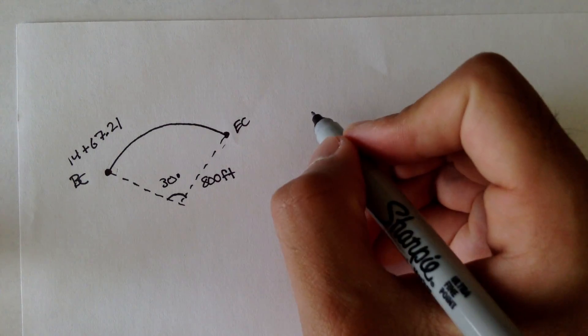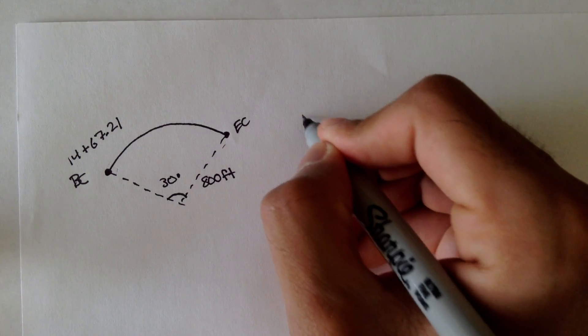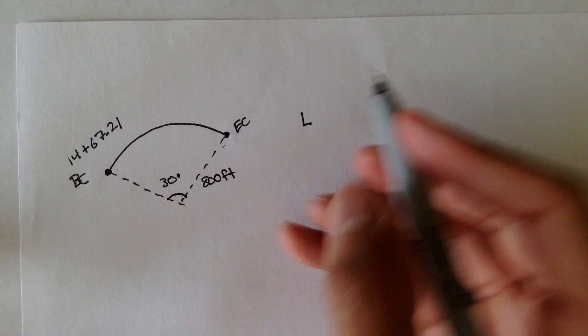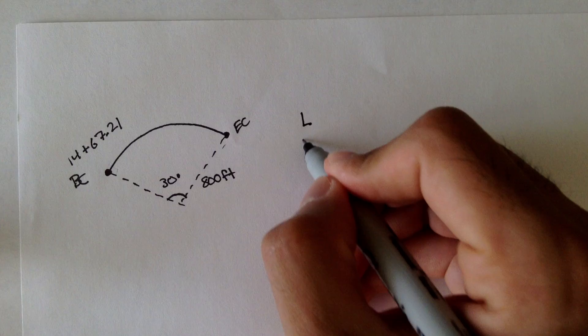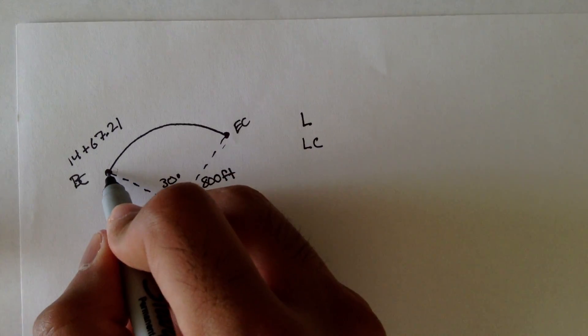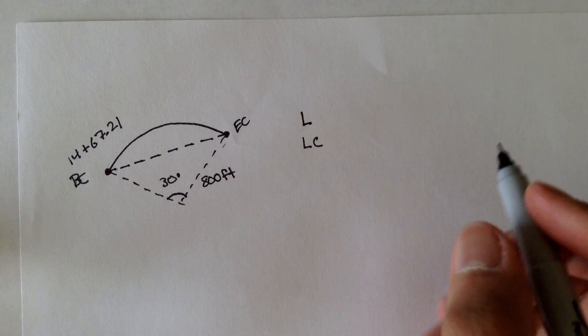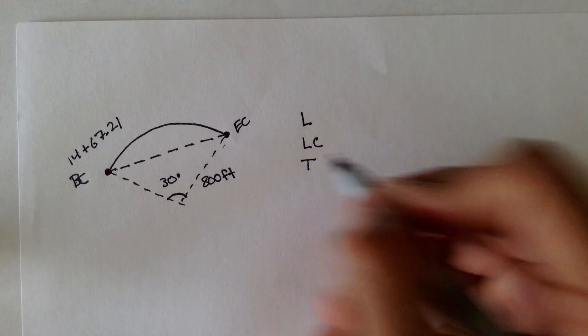And the problem wants us to find out the length, the length of this curve, so the distance from BC to EC. The long cord, remember, it's the straight distance from BC to EC.